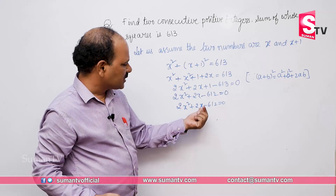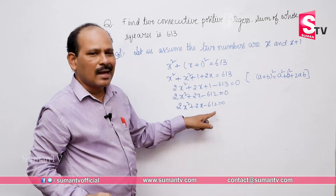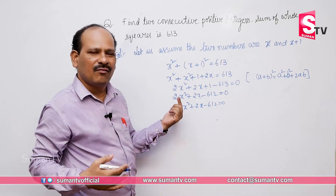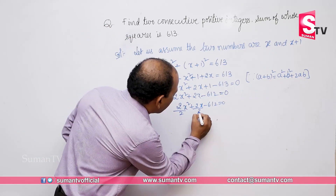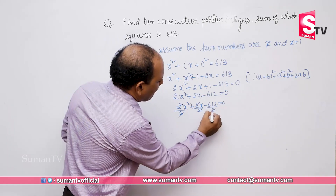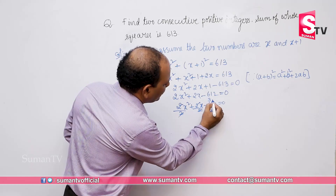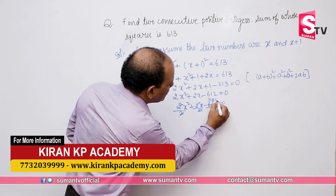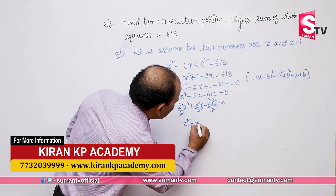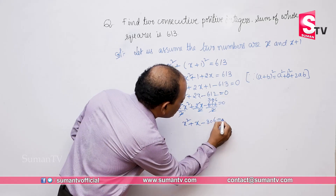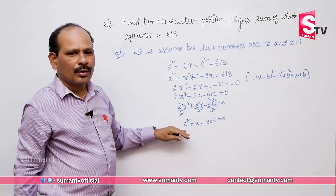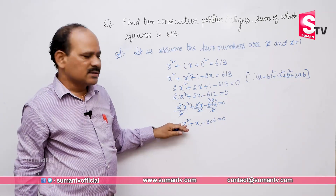Now 2X square plus 2X minus 612 — every term is a multiple of 2, so I can divide every term by 2 to simplify. Dividing by 2, the equation becomes: X square plus X minus 306 equals 0. This is now in quadratic equation form.